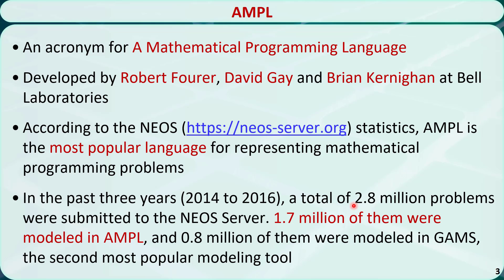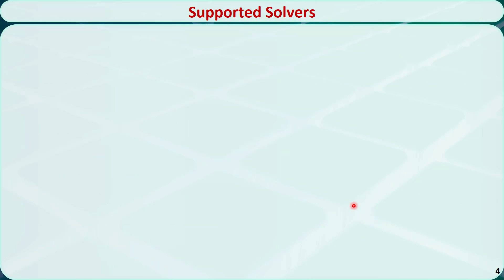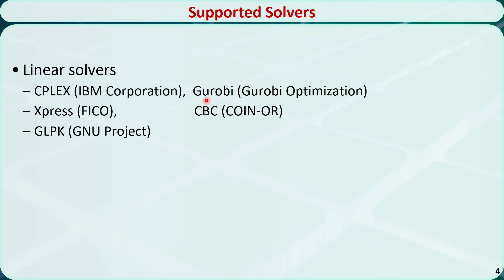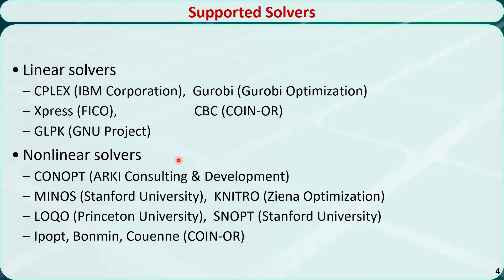AMPL is just a modeling language. It translates the problem into a mathematical model and then relies on external solvers to actually solve the formulated model. AMPL supports both open-source and commercial solvers. Linear solvers mainly handle linear and convex quadratic optimization problems with both continuous and integer variables. Nonlinear solvers are effective in handling and finding locally optimal solutions to problems involving smooth nonlinear functions using a variety of proven algorithms.